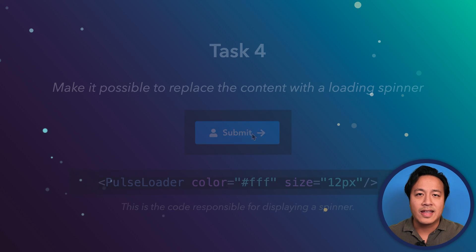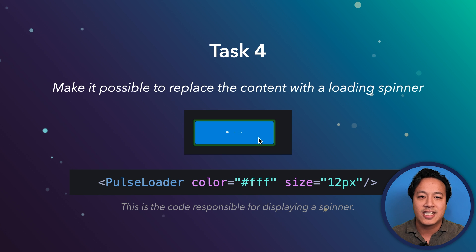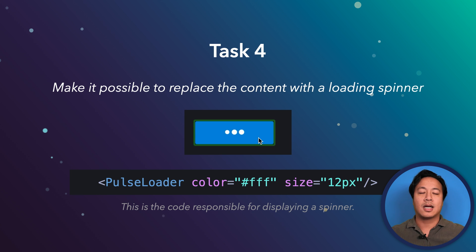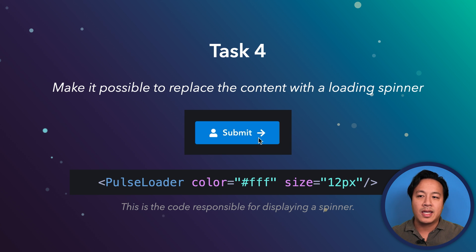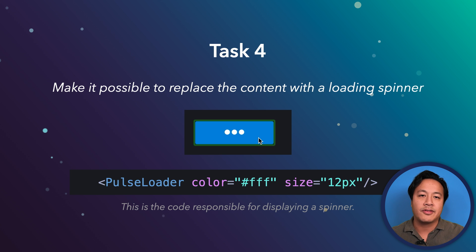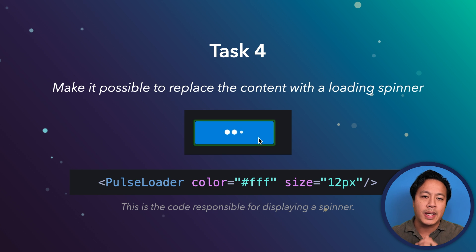Now you've got that done. The product manager still has even more requirements, because — you think it's just a button, but it just keeps coming. Now the question is: we want to make it possible to replace the content with a loading spinner, especially if it's making some sort of fetch to the back end. Assume we have an animated pulse loader component that you'll put inside your button component to allow you to do that. Go ahead and scaffold that out in your head.